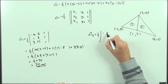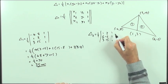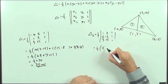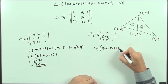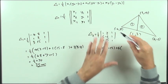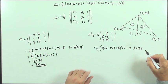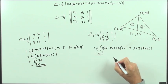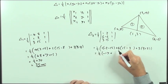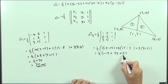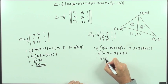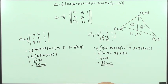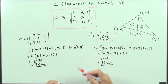One half of 70 is 35 square units. For triangle two, the coordinates are 1, 3, 1 / 6, negative 2, 1 / 3, 15, 1. Expanding: 1 times (negative 2 minus 15), plus 6 times (15 minus 3), plus 3 times (3 minus negative 2). That gives negative 17 plus 72 plus 15 = 70. One half of 70 is again 35 square units — the same answer, confirming the determinant formula.